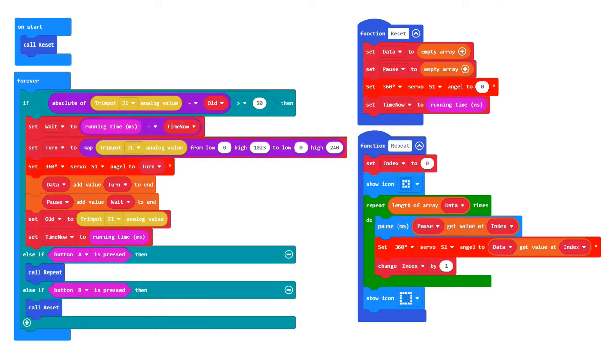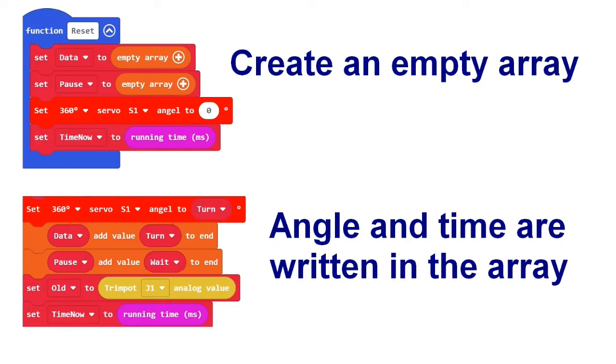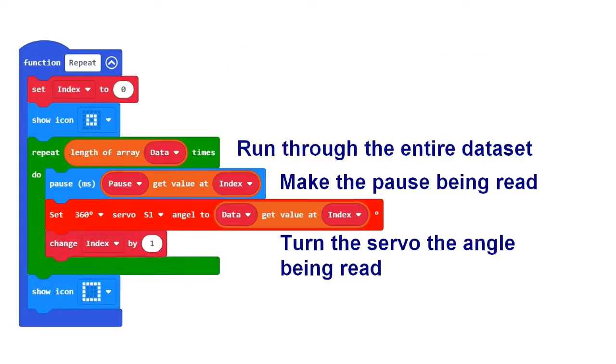Now the program looks like this. Here you see the block that creates two empty arrays and the block that stores the data. What is saved is the angle and the time that has elapsed since the last movement. When you press button A, the function called repeat runs.